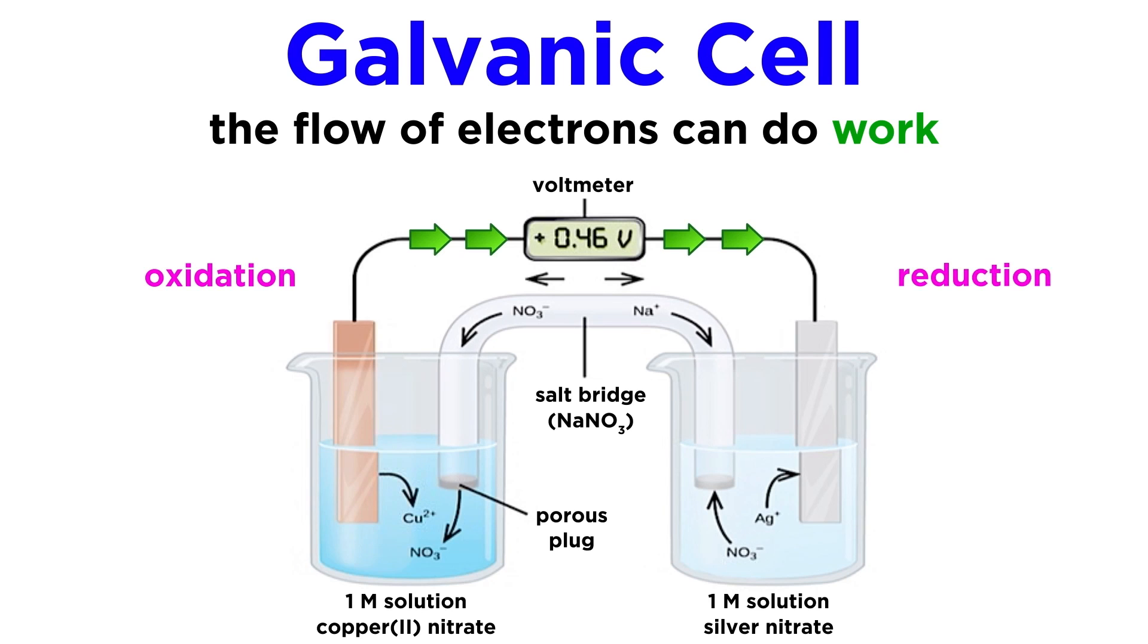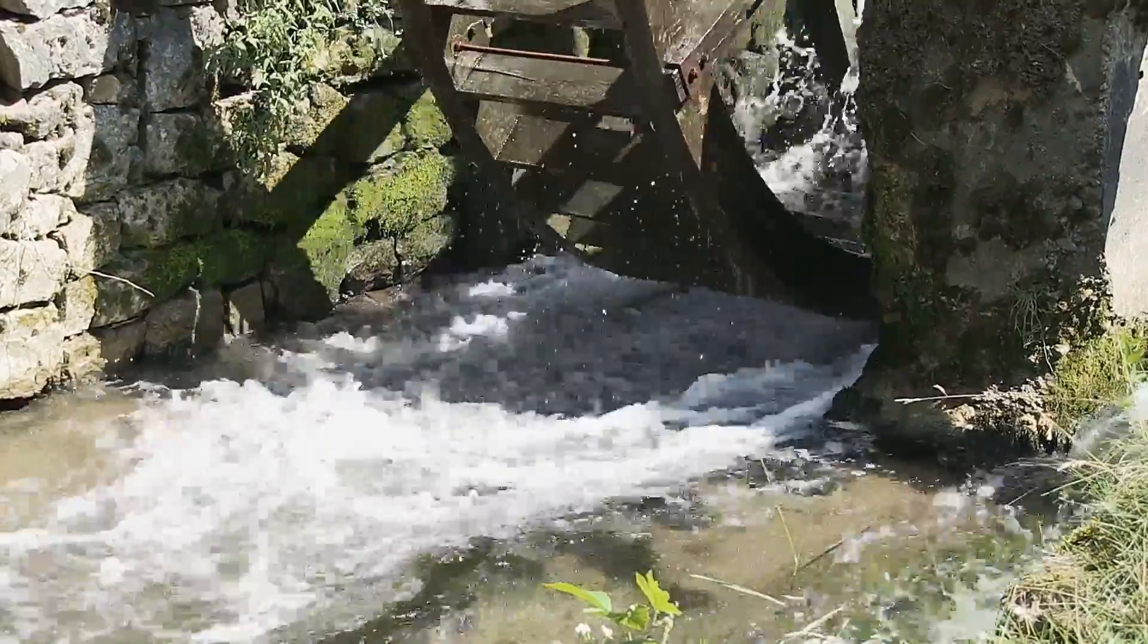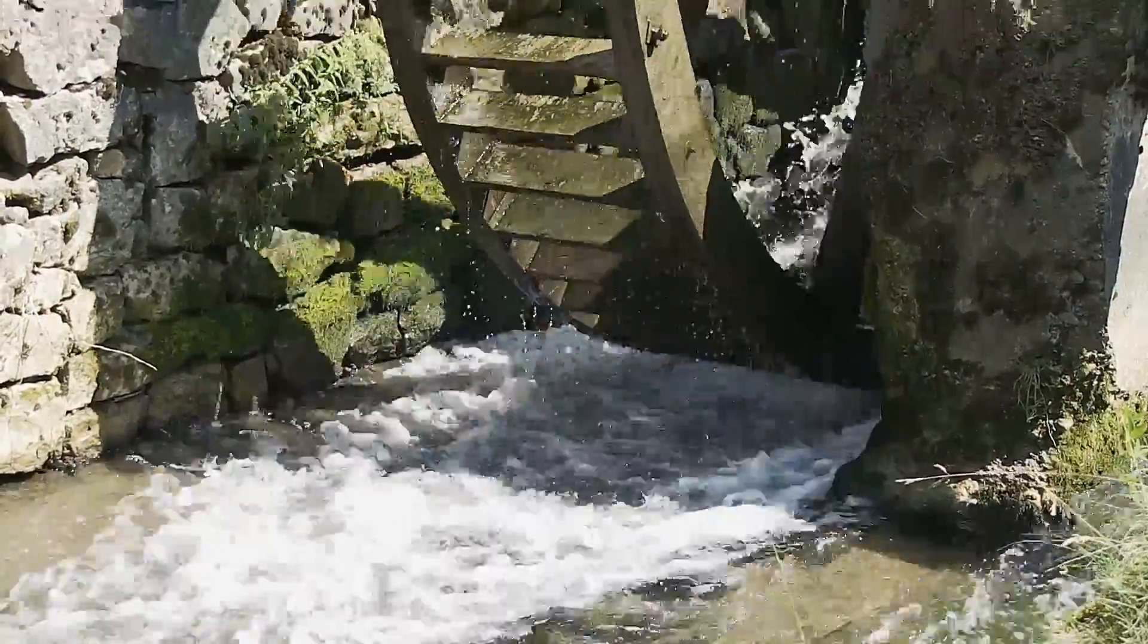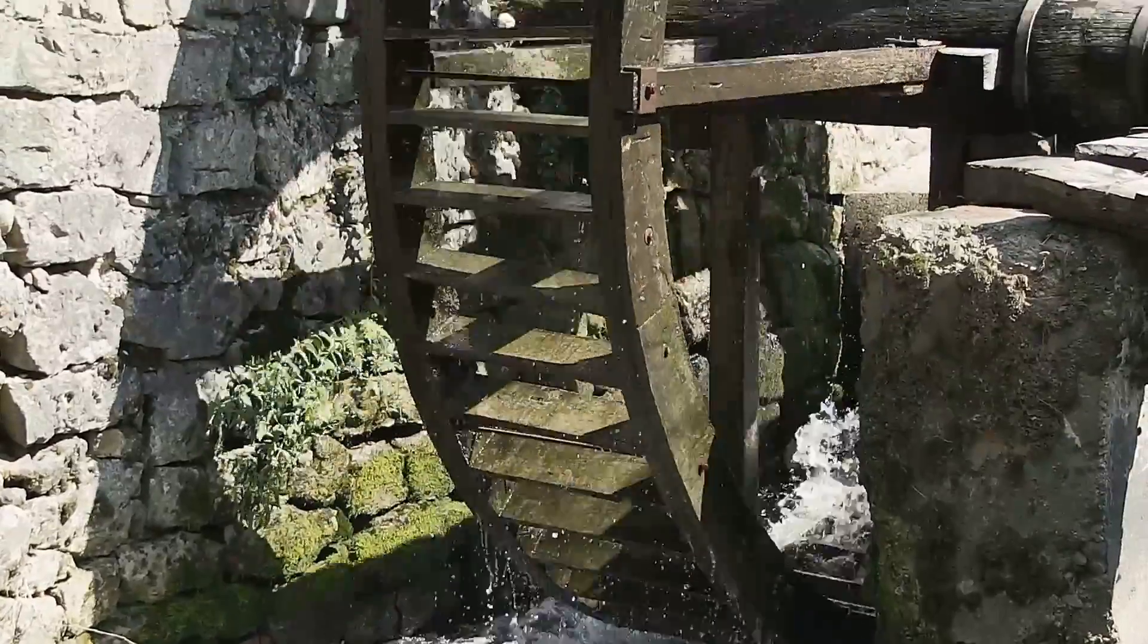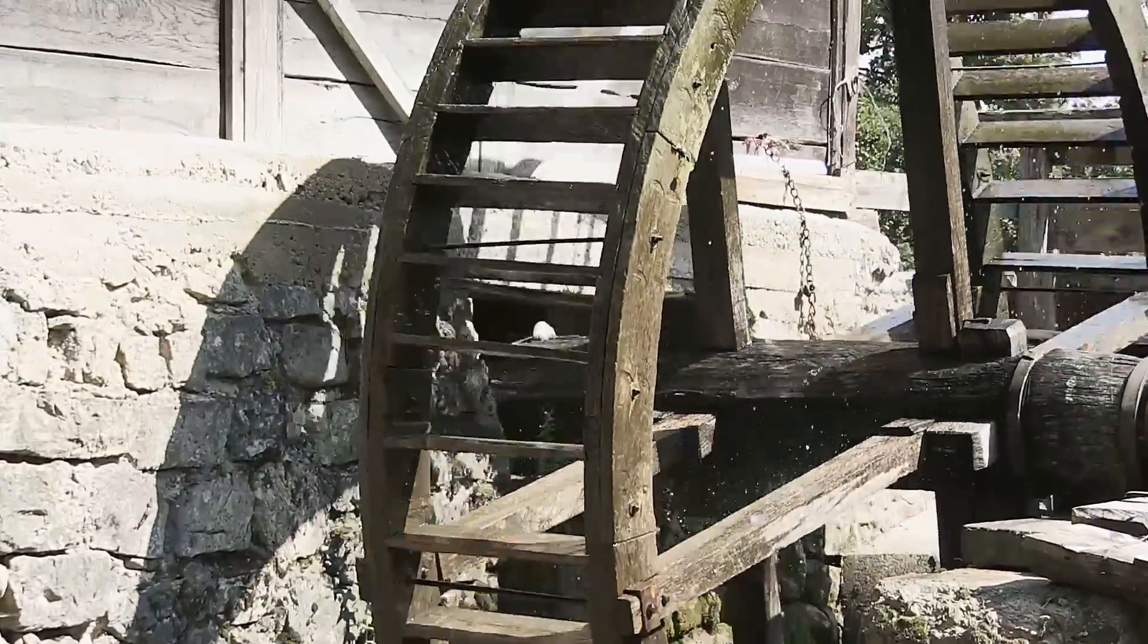This is because the flow of electrons, which is what an electric current is, can do work. Just like water spontaneously flowing downstream in a river can do work and push a water wheel, which can then drive some mechanical function.